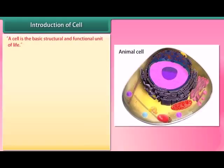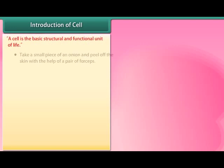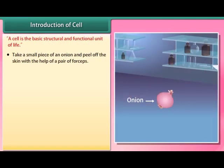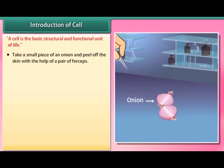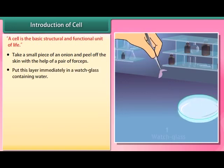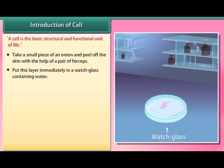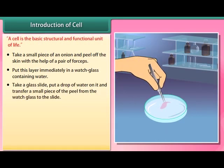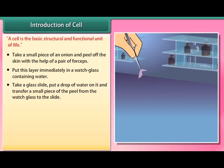A cell is the basic structural and functional unit of life. Experiment: take a small piece of an onion and peel off the skin with the help of a pair of forceps. Put this layer immediately in a watch glass containing water. Take a glass slide, put a drop of water on it, and transfer a small piece of the peel from the watch glass to the slide.